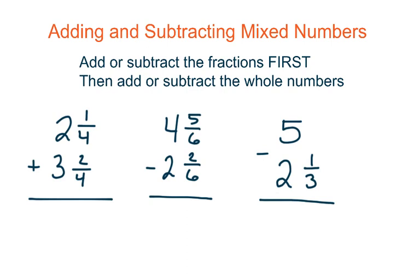In this first problem we're going to add our fractions first, so this will go pretty straightforward. We're going to add 1 fourth plus 2 fourths, so we get 3 fourths, and then we add our wholes and we get 5. That mixed number sum is complete.